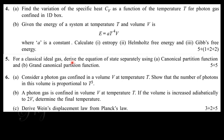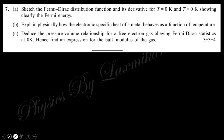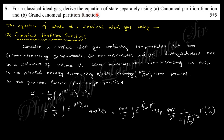Question number five says: for a classical ideal gas, derive the equation of state separately using the canonical partition function and the grand canonical partition function. You need to find the equation of state by both methods. There are three partition function methods: microcanonical, canonical, and grand canonical. Microcanonical means isolated system, canonical means closed system, and grand canonical means open system.